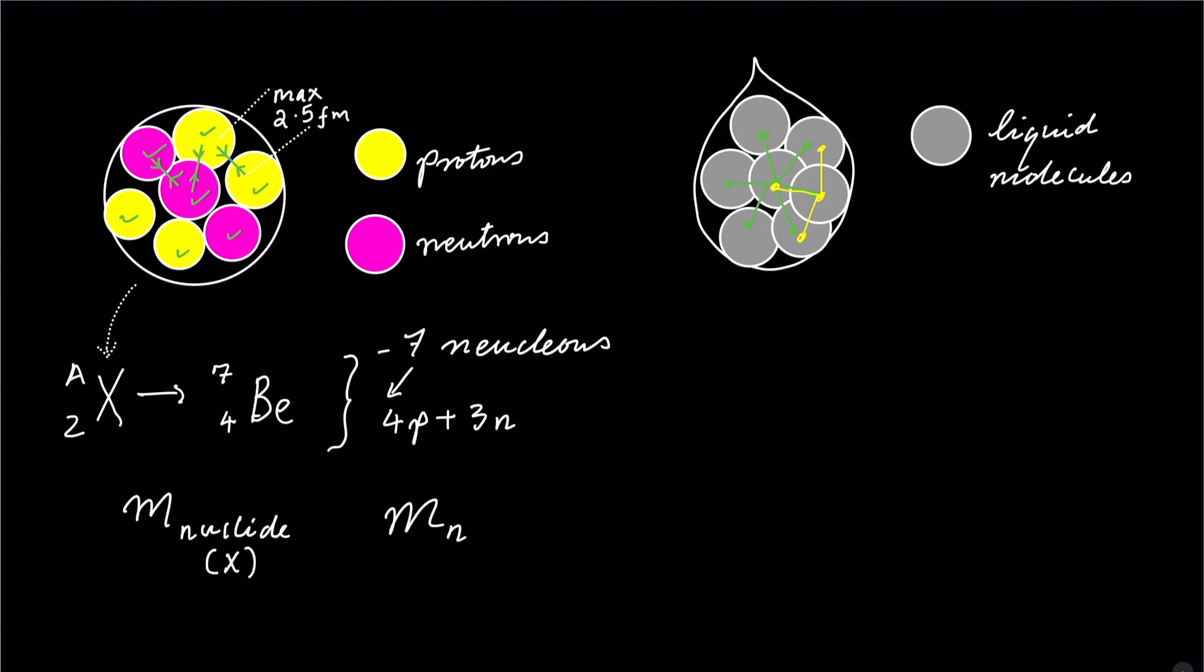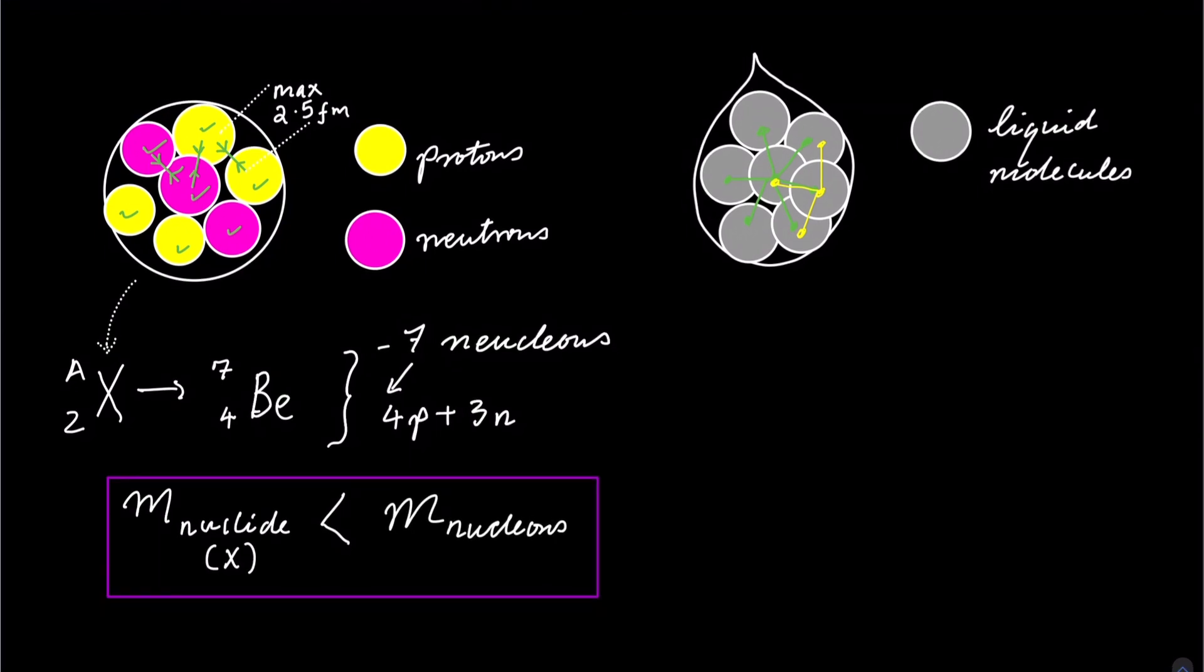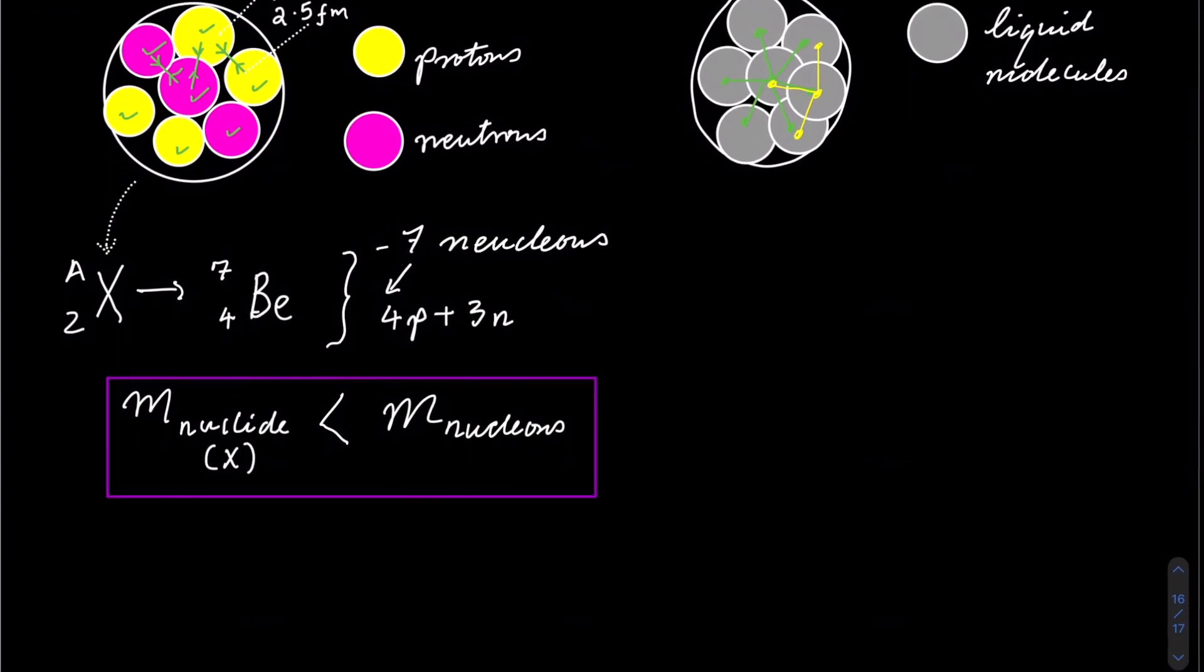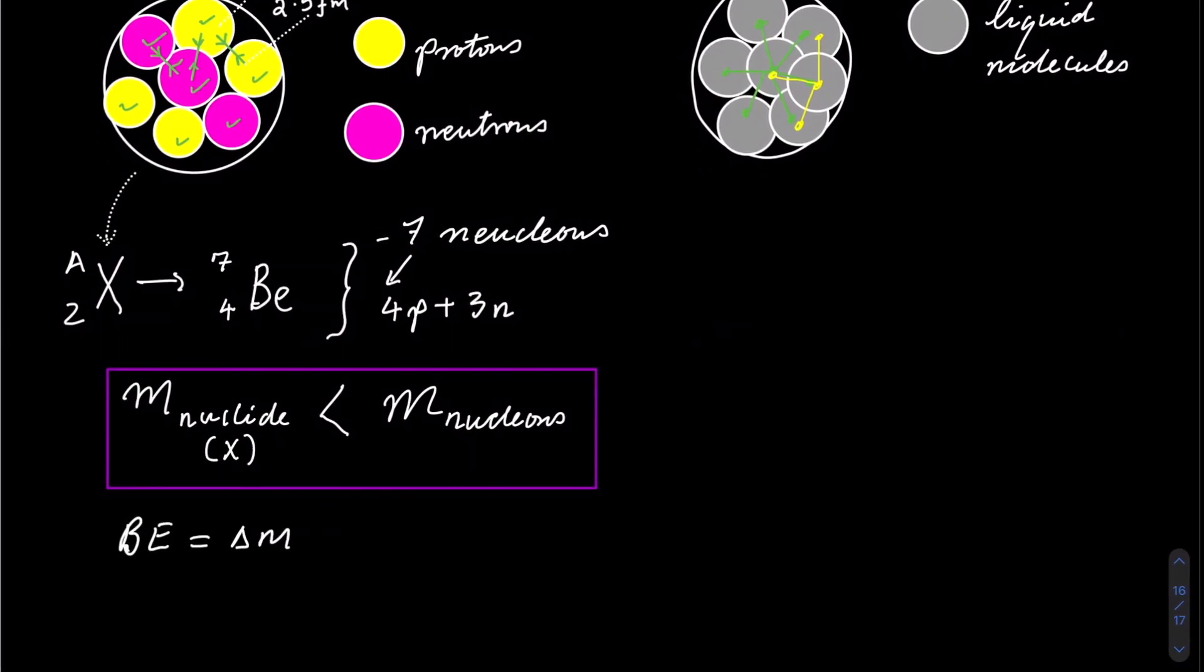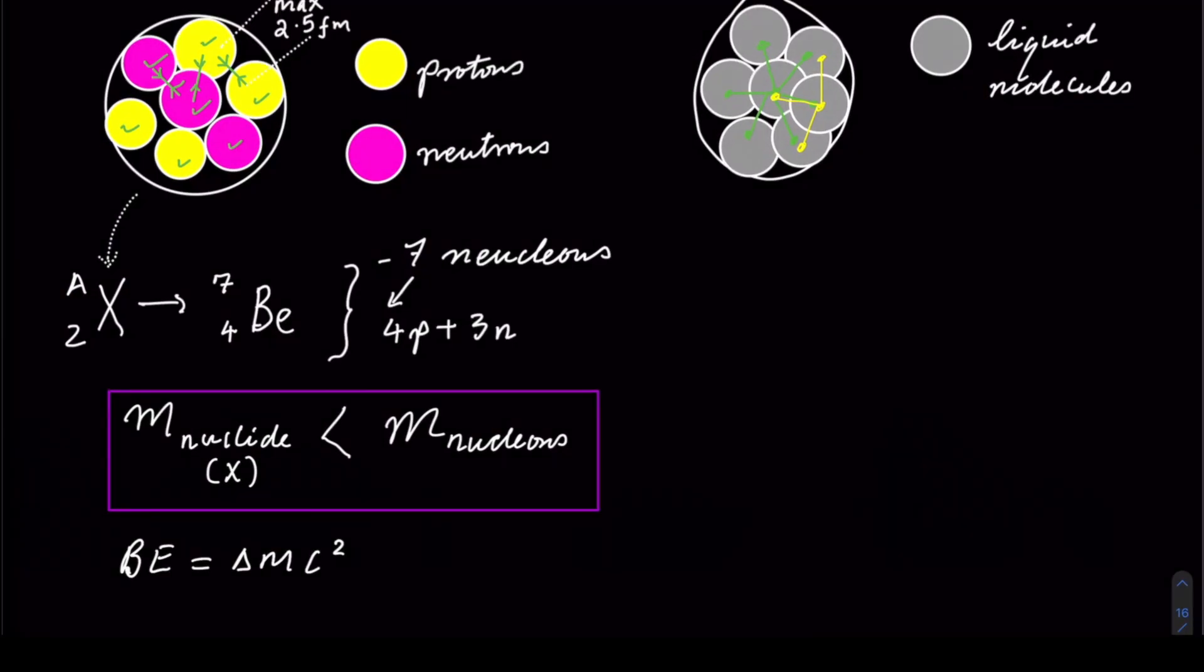The mass of the nucleus is always less than the mass of the nucleons. And we can calculate the binding energy from the difference in masses multiplied by the square of the speed of light.